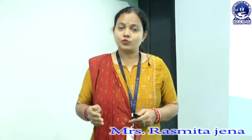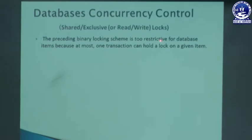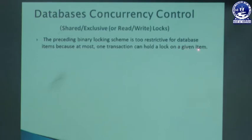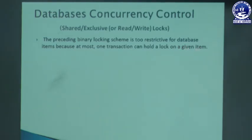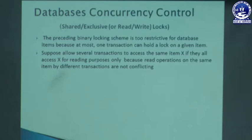In binary locking system, if there are more than one transaction voting for a particular data item, it will be restricted. Binary locking is too restrictive on the database item because at most one transaction can hold a lock on a given item at a time. This restriction is overcome in share and exclusive locking system.